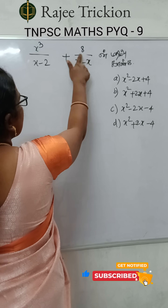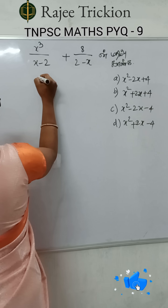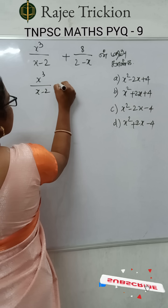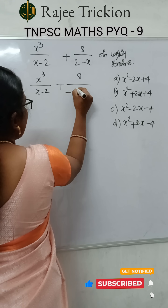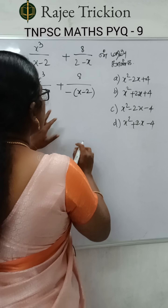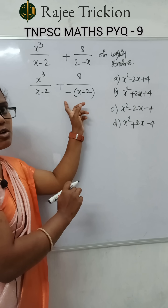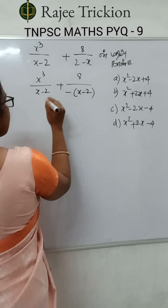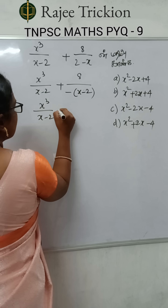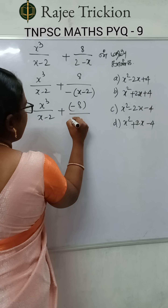This is the same problem. How do we solve this? You can write the minus and we have the same problem. So x³ divided by x minus 2, plus 8 divided by minus of x minus 2. We substitute here for minus x plus 2, so we have to write the minus here. Let's add the minus: x³ divided by x minus 2, plus minus 8 divided by x minus 2.